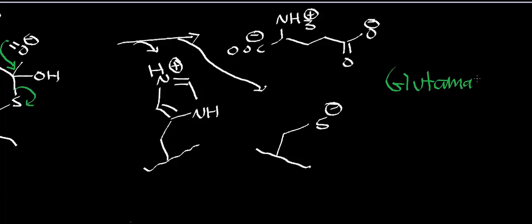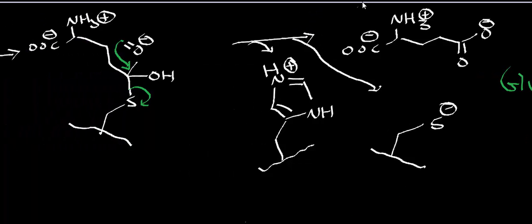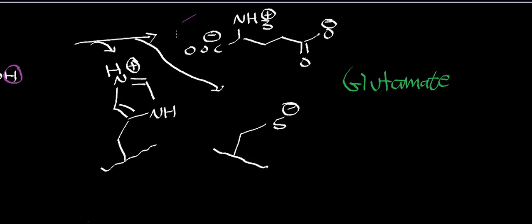This molecule right here is glutamate. Notice that this is glutamate after it's done a proton exchange with solution. This particular proton that's right here will be there at the end of the mechanism of the enzyme. But when glutamate, or in this case glutamic acid, leaves the active site, it will quickly lose that proton to solution, and that will generate this glutamate right here.